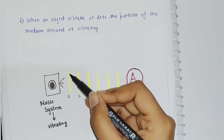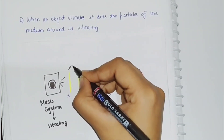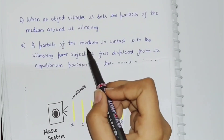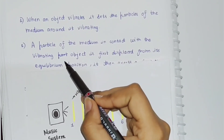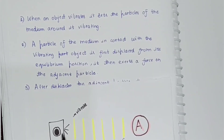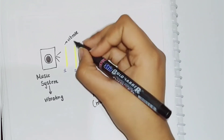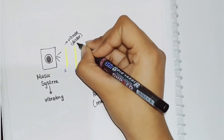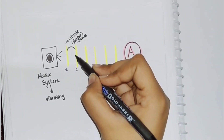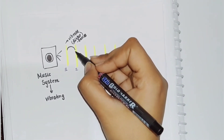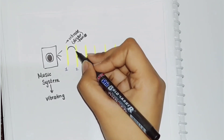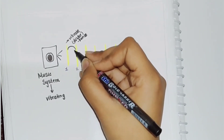So which particle will be disturbed first? Particle 1 is the closest to the music system, so particle 1 is disturbed first. A particle of the medium in contact with the vibrating object is first displaced from its equilibrium position, and it exerts a force on the adjacent particle. So particle 1 transfers its energy and force to particle 2, and particle 2 gets disturbed.